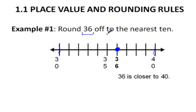Now to determine which number it is closer to, you have to count how many steps it is up to 40 down to 30. 1, 2, 3, 4.